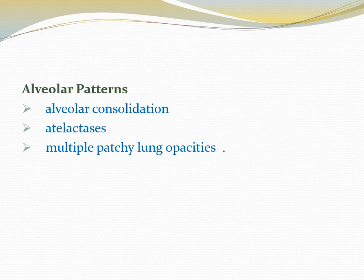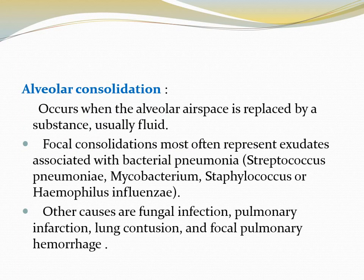Alveolar patterns include alveolar consolidation, atelectasis, and multiple patchy lung opacities. Alveolar consolidation occurs when the alveolar airspace is replaced by a substance, usually fluid. Focal consolidation most often represents exudates associated with bacterial pneumonia, like Streptococcus pneumoniae, Mycobacterium, Staphylococcus, or Haemophilus influenzae. Other causes are fungal infection, pulmonary infection, lung contusion, and focal pulmonary hemorrhage.